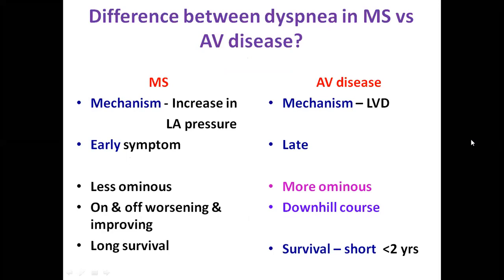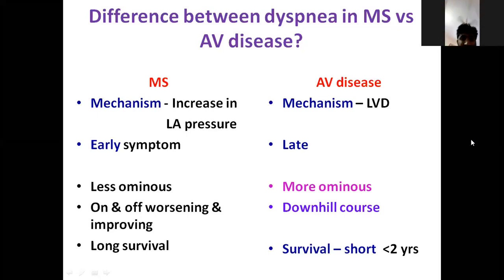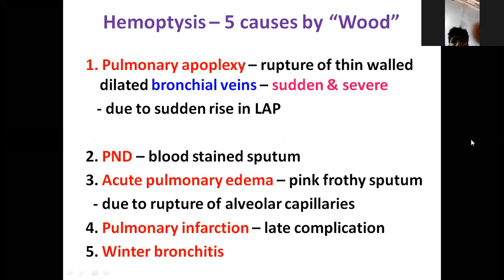A commonly asked question: what is the difference between dyspnea in mitral stenosis versus aortic valve disease? In mitral stenosis the first thing to happen is increase in LA pressure, so dyspnea is an early symptom. It is less ominous because it improves with heart rate control or conversion of AF, and patients have long survival. Whereas in aortic valve disease, the mechanism of dyspnea is LV dysfunction — a late manifestation — and it is more ominous, with survival less than two years once dyspnea develops.